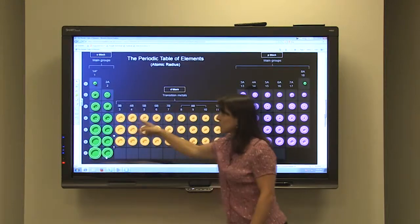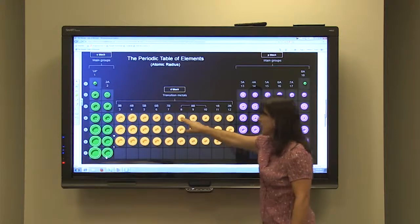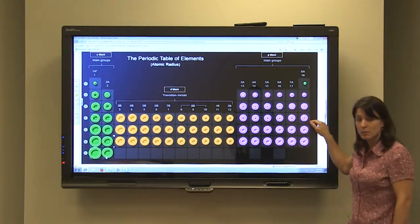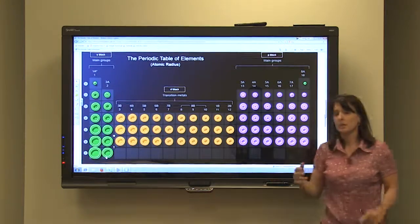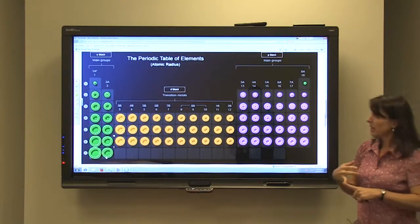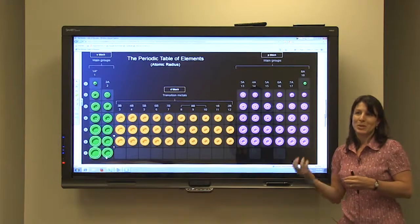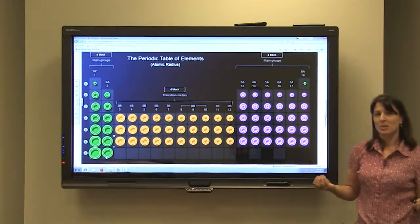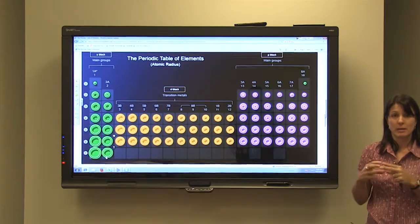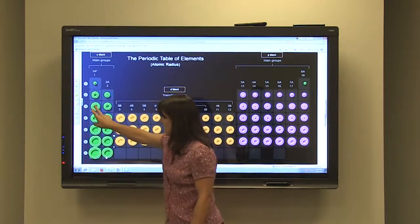Going across from left to right, however, you'll notice that they start out large and they start getting smaller and smaller. Even though the atomic number is increasing, which means more protons in the nucleus and more electrons outside the nucleus, there's actually a greater attraction between the electrons outside the nucleus and the protons in the nucleus and the atoms tend to compress a little bit and it gets a little bit smaller.